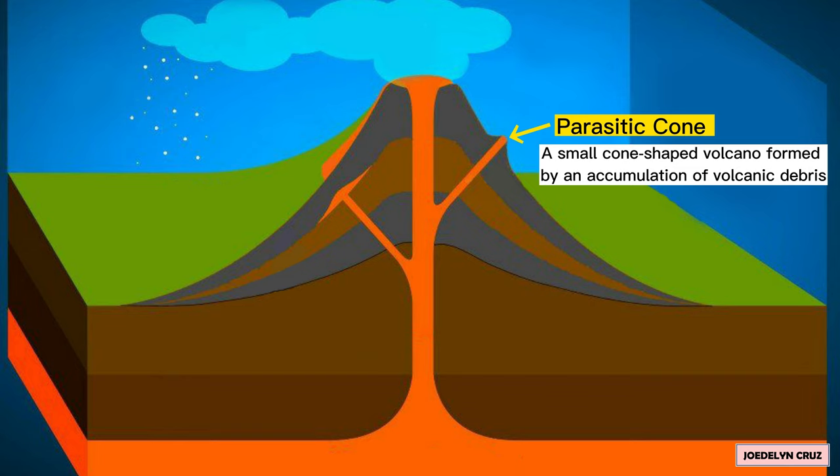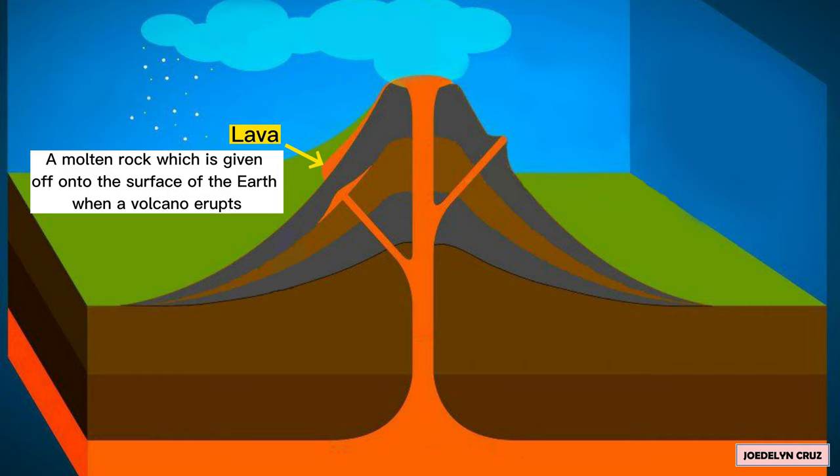Lava. Lava is a molten rock which is given off onto the surface of the Earth when a volcano erupts.